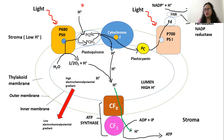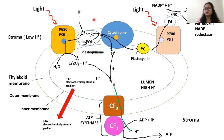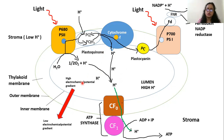When protons are extracted from the stroma and released into the lumen of the thylakoid, there is an increase in proton concentration inside the thylakoid lumen and a decrease in proton concentration in the stroma of the chloroplast. This creates an electrochemical gradient, or proton gradient. There is a high proton gradient in the thylakoid lumen while there is a low proton gradient in the stroma. This gradient is broken down with the help of the enzyme ATP synthase.